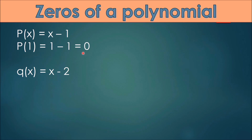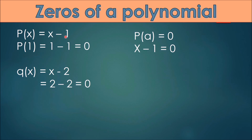Similarly, for q(x) = x minus 2, replacing x by 2 gives the value 0. We observe that the zero of the polynomial x minus 1 is obtained by equating it to 0: x minus 1 = 0 gives x = 1. We say that p(x) = 0 is a polynomial equation and 1 is the root of the polynomial equation p(x) = 0. So 1 is the zero of the polynomial x minus 1, or equivalently a root of the polynomial equation x minus 1 = 0.